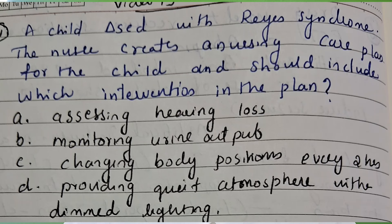A child diagnosed with Reye's Syndrome — the nurse creates a nursing care plan for the child. Which intervention should be included in the plan? Option A: assessing hearing loss. Option B: monitoring urine output. Option C: changing body positions every 2 hours. Option D: providing a quiet atmosphere with dimmed lighting.